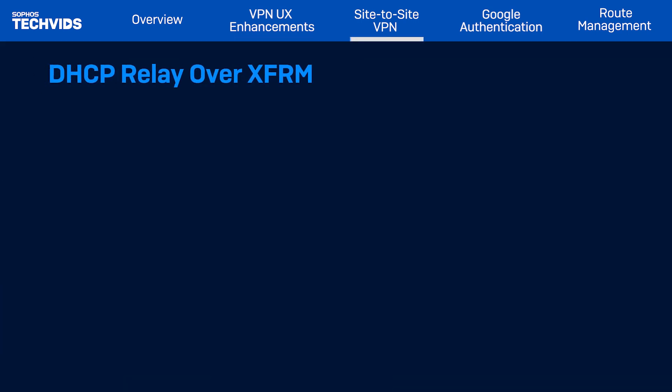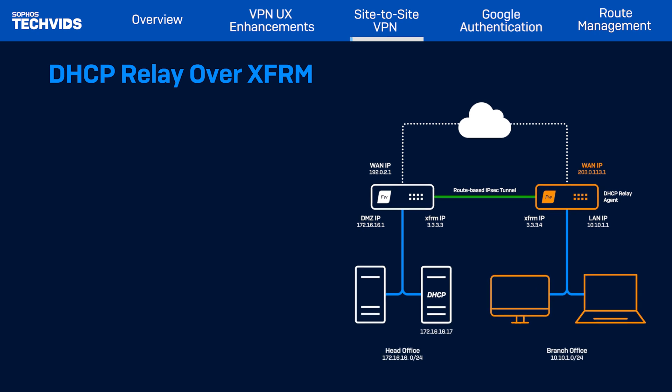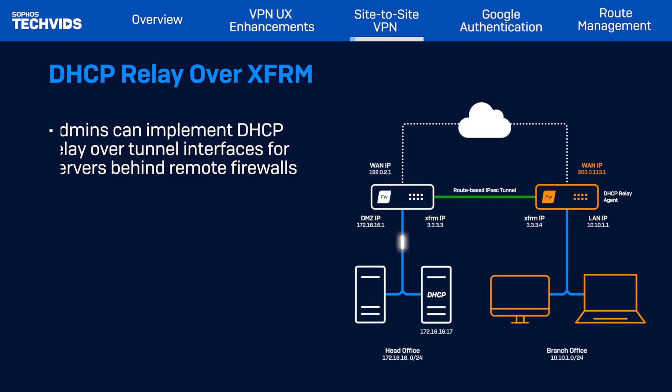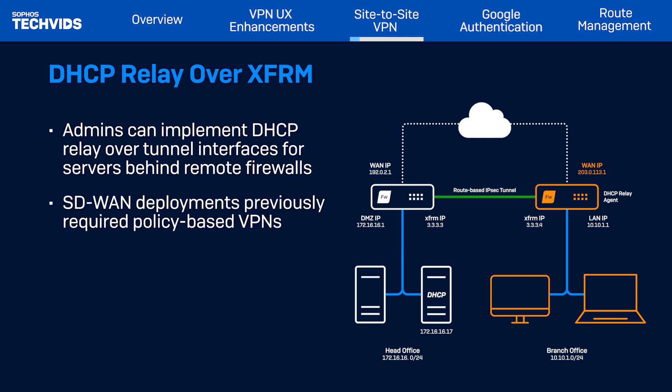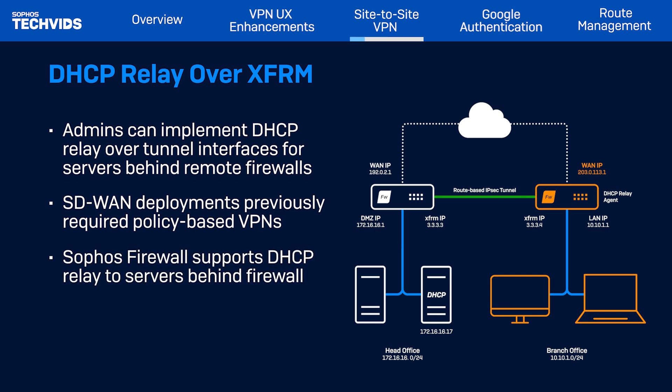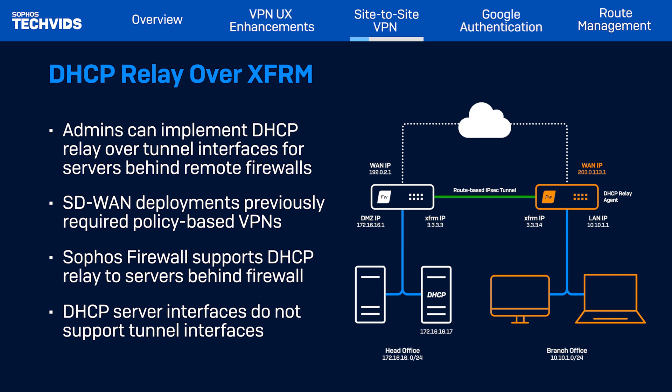Along with the UX enhancements, we've introduced the long-awaited feature of DHCP relays over XFRM tunnel interfaces. Admins can now implement DHCP relays over tunnel interfaces for servers located behind remote firewalls. Previously, in SD-WAN deployments, DHCP relay over tunnel interface wasn't possible, necessitating policy-based VPNs for specific use cases. Please note that in this release, Sophos Firewall supports DHCP relays to servers behind the firewall; however, firewall interfaces configured as DHCP servers don't support tunnel interfaces.